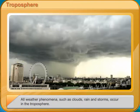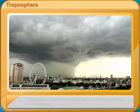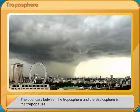The stratosphere extends up to 50 km above the surface of the Earth. There are no clouds or weather changes in the stratosphere. This is an almost undisturbed layer, and that is why airplanes are flown in this layer.